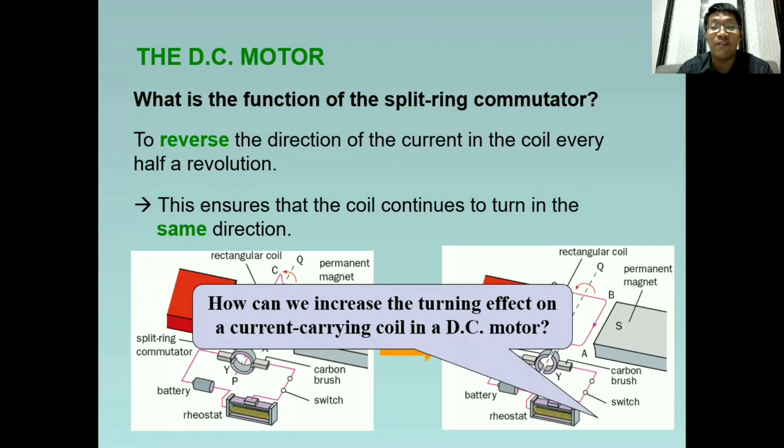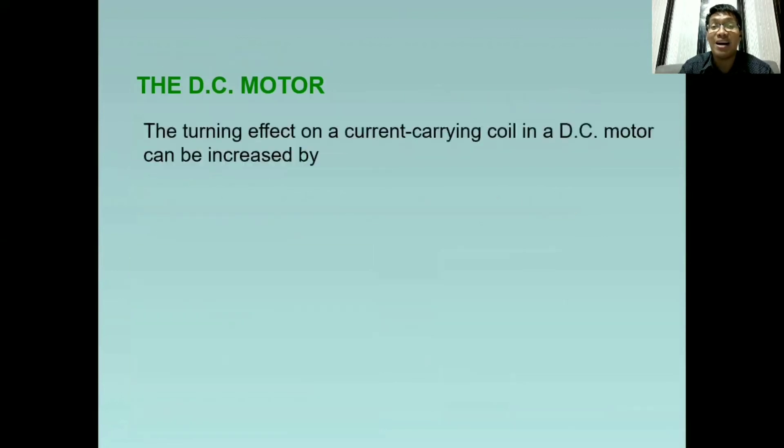So how can we increase the turning effect on a current carrying coil in a DC motor? So paano nga ba? So we have several ways to improve the turning effect on a DC motor. So the first one, we can increase the number of turns in the coil. So in the example, we only have one turn for that coil. So we can add more. And the more we add, the higher the turning effect.